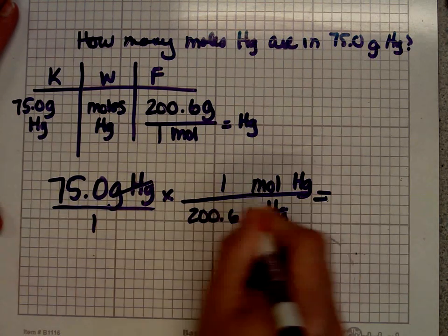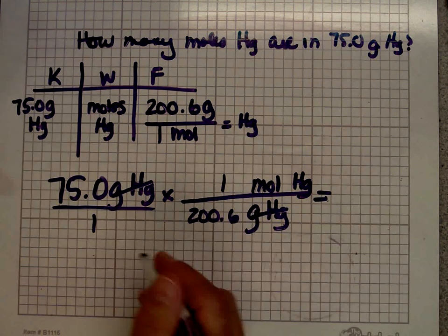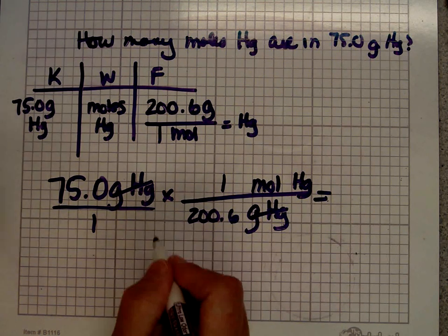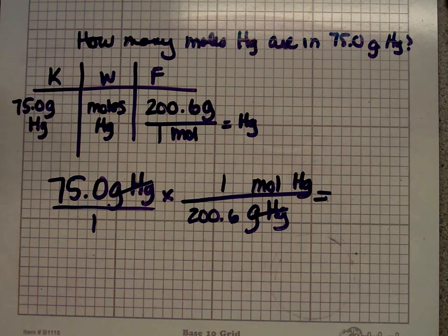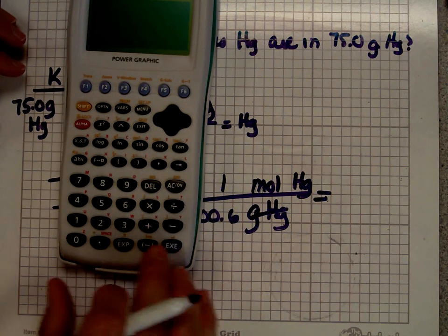Everything above the line, everything on the numerator, I multiply together. So I have 75 times 1, that's 75. Everything in the denominator, I divide by. So 75 divided by 1 is 75. And then I have 75 divided by 200.6. So let's take a look and see what that is.